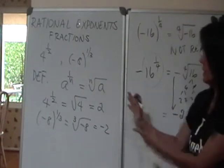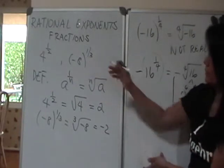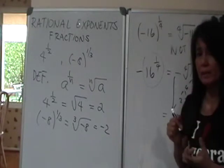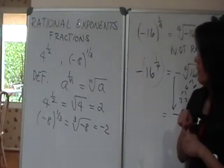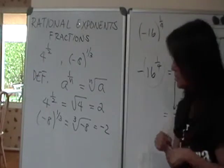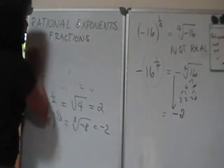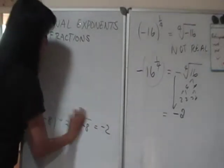So hopefully that's clear how to interpret the rational expression 1 over an integer, 1 over a positive integer. All right, so what's the next thing?